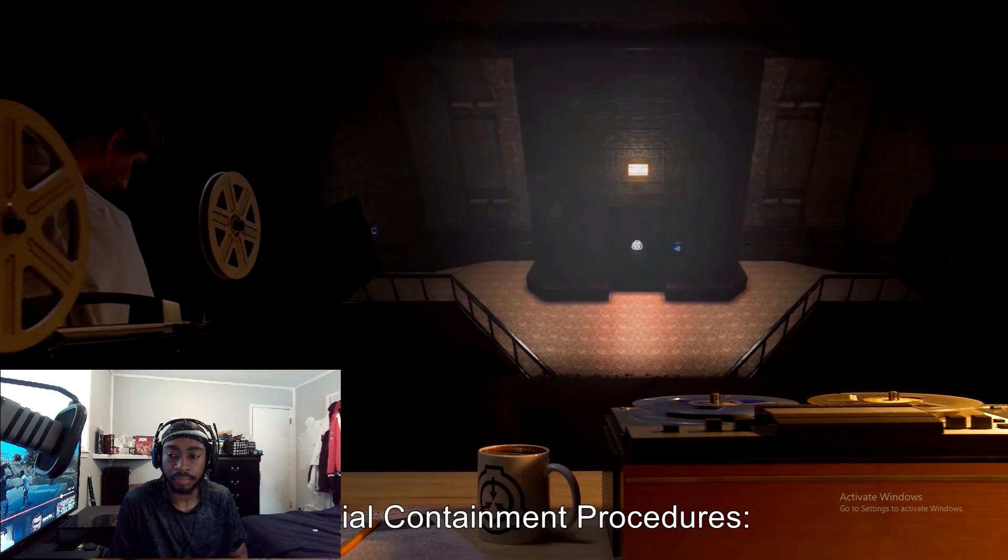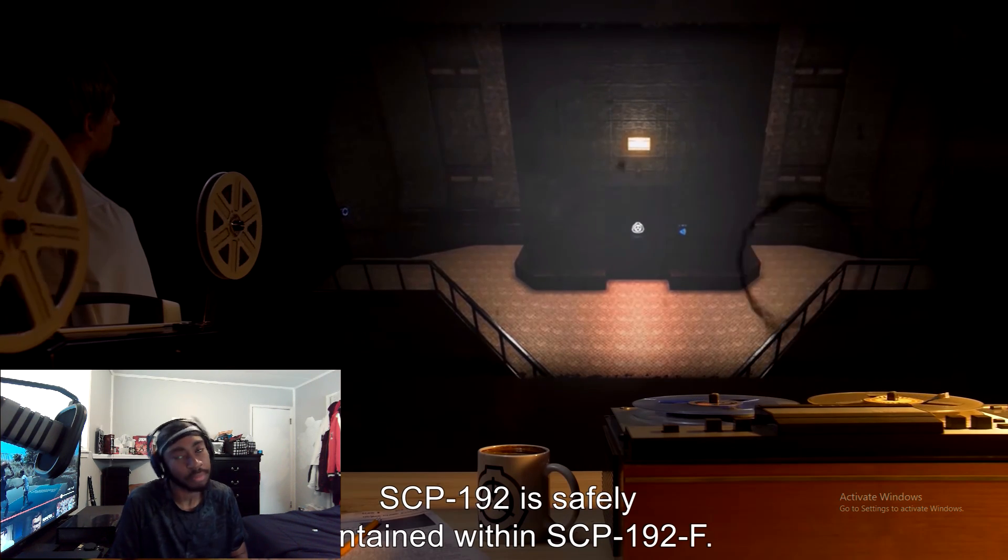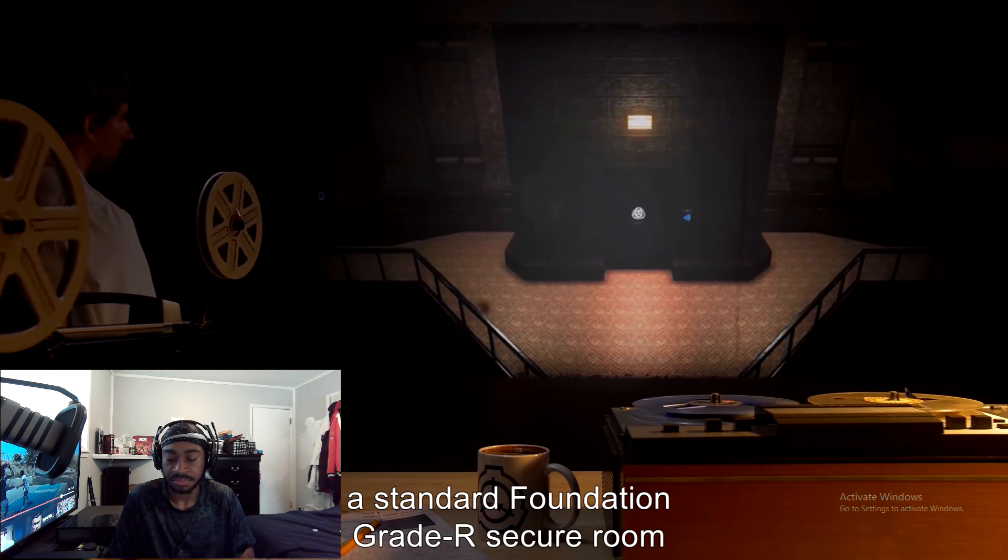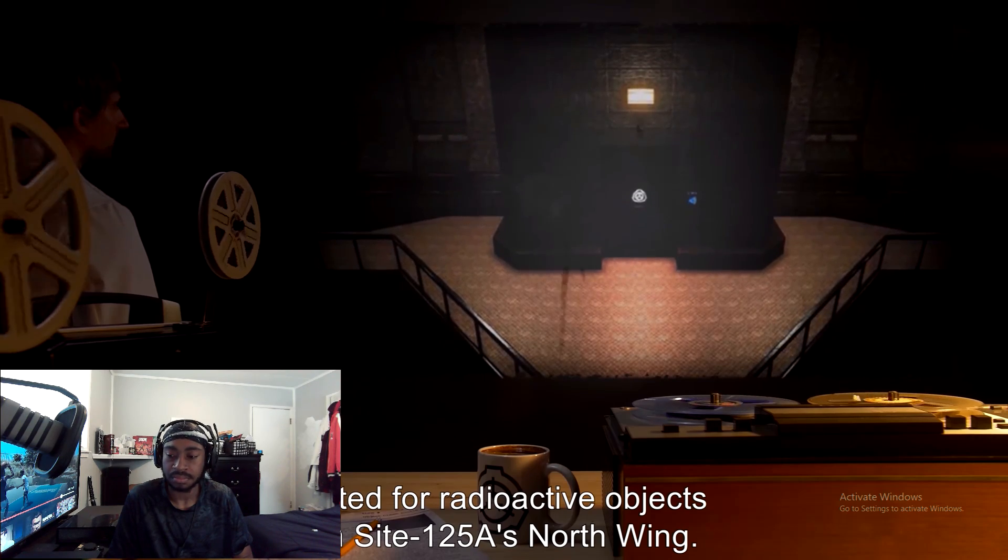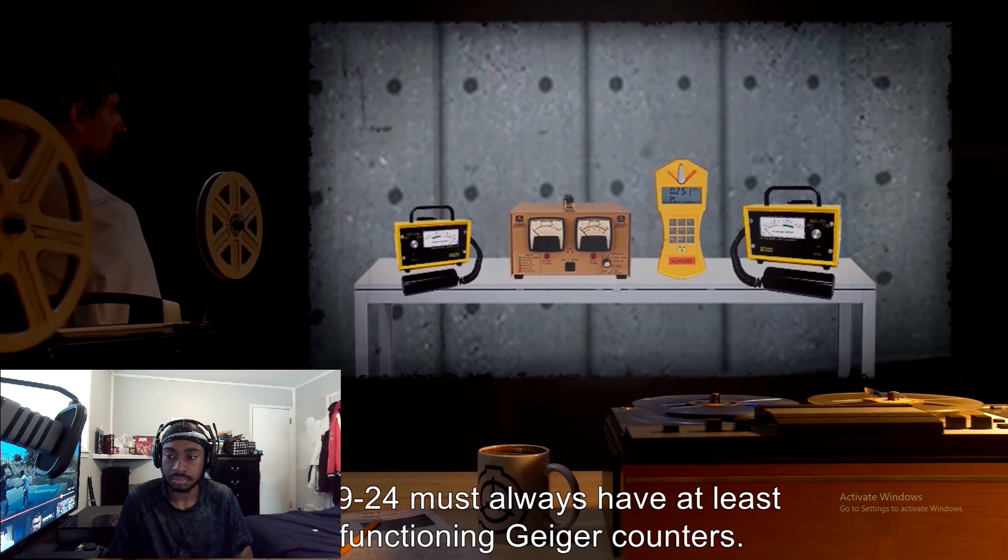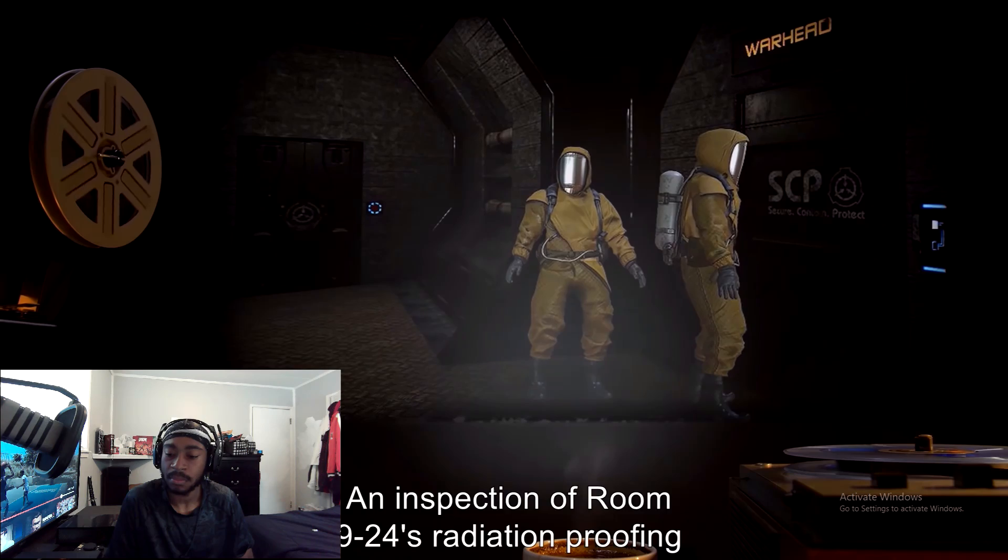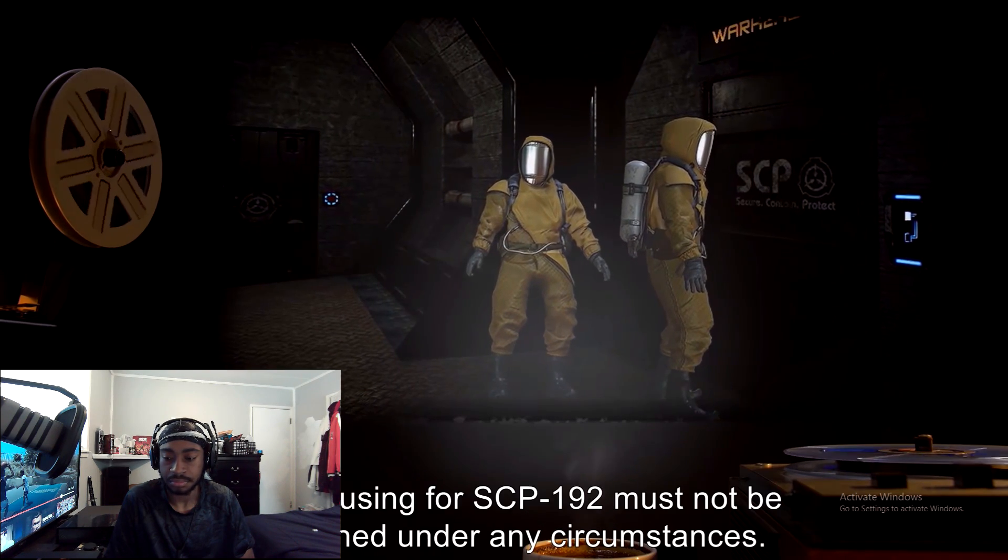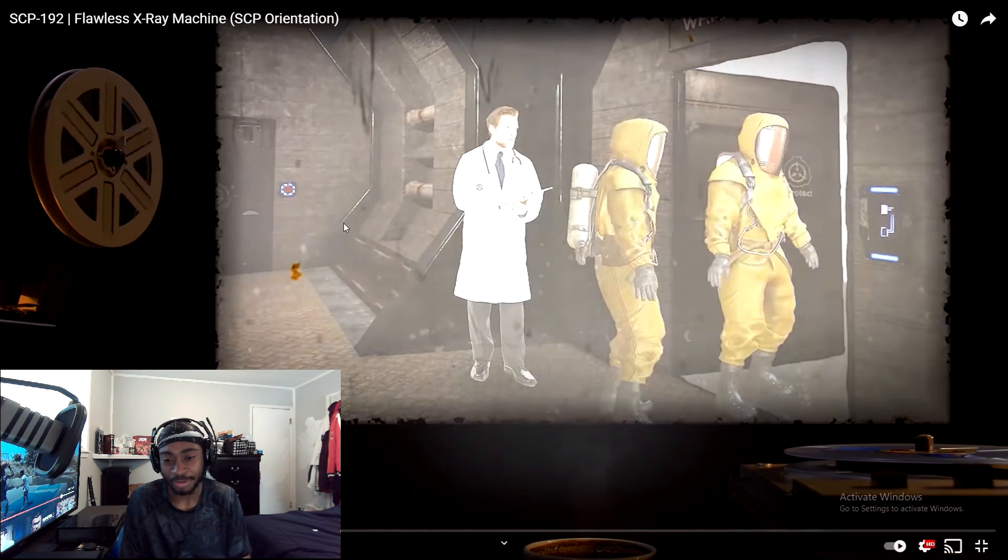Special Containment Procedures. SCP-192 is safely contained within SCP-192-F. SCP-192-F is located in Room 924, a standard Foundation Grade R secure room rated for radioactive objects in Site-125-A's north wing. Room 924 must always have at least four functioning Geiger counters. Are Geiger counters supposed to be like one of those little radiation detector things? Like in Fallout?